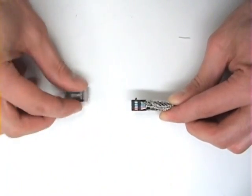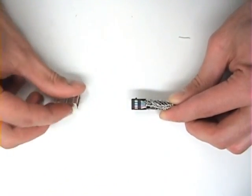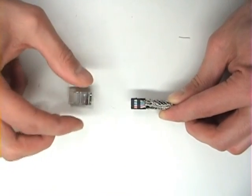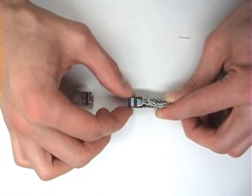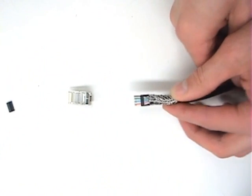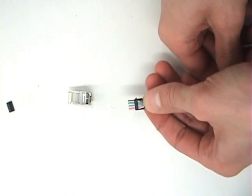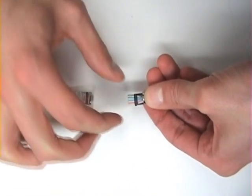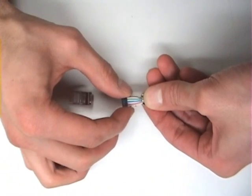And now, in order to install the cable into the connector, remove both of the load bars. Before removing the second load bar, pinch the end of the jacket. This will help keep the wires in position.